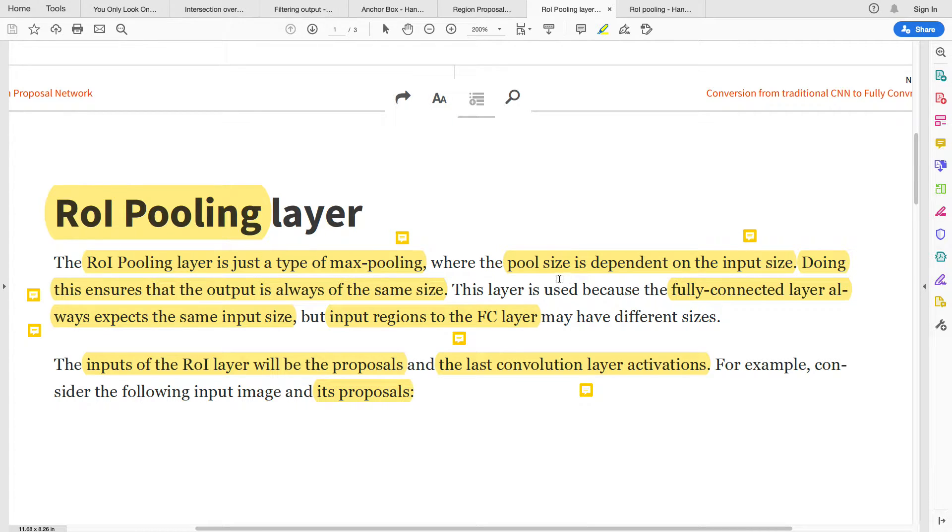That's the difference between the ROI pooling layer in object detection compared to max pooling in convolutional neural networks. The pool size is dependent on the input. Doing this ensures that the output is always of the same size.